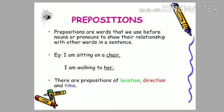So students, we have learned today that prepositions are words that we use before nouns or pronouns to show their relationship with other words in a sentence. Example, I am sitting on a chair. I am walking to her. Now, there are prepositions of location, direction, and time in these sentences.